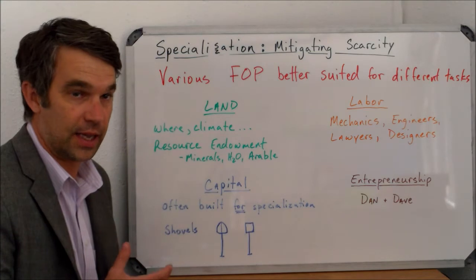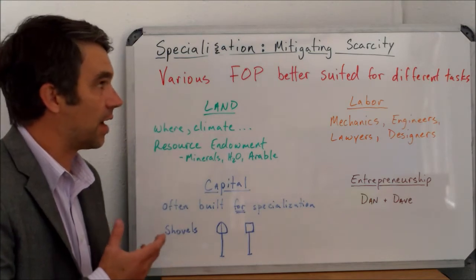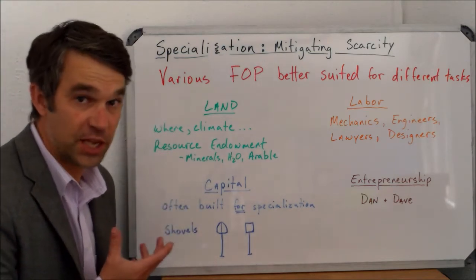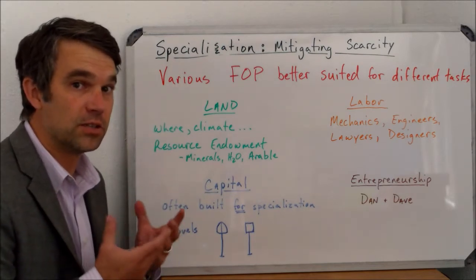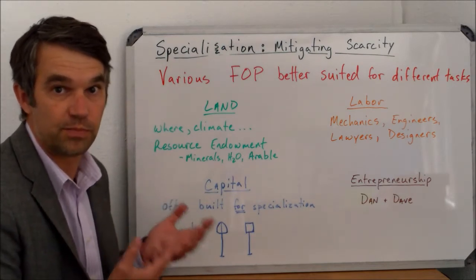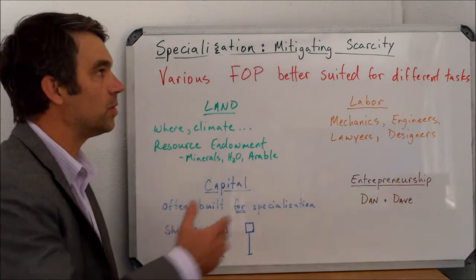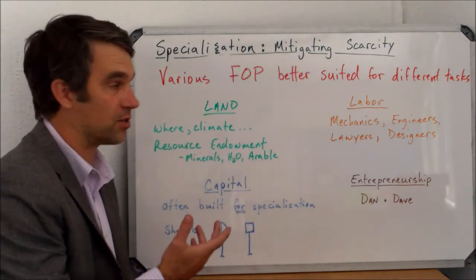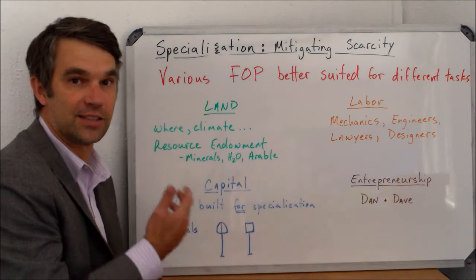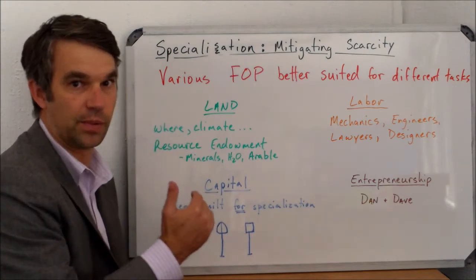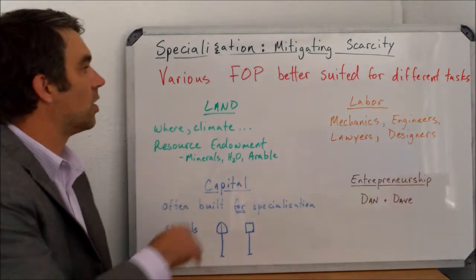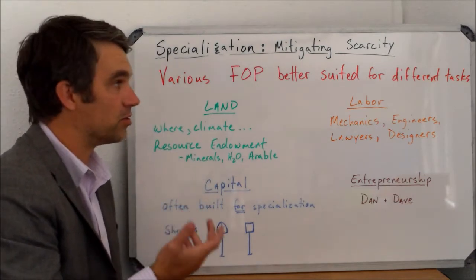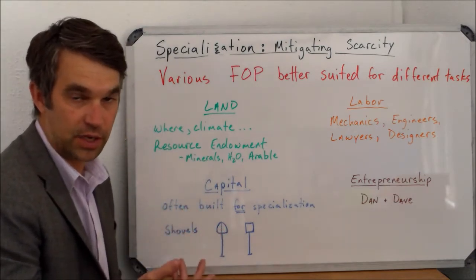Today we're looking at the PPC again. This time we want to see how we can see specialization. Specialization in economics means using a resource for the purpose that it's best suited. By doing so, we're going to see that we can make scarcity and the problems of scarcity less severe — we're going to mitigate the problem of scarcity. We have to understand that different factors of production are better suited for different economic activities.